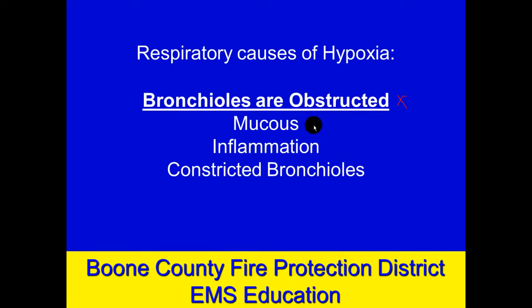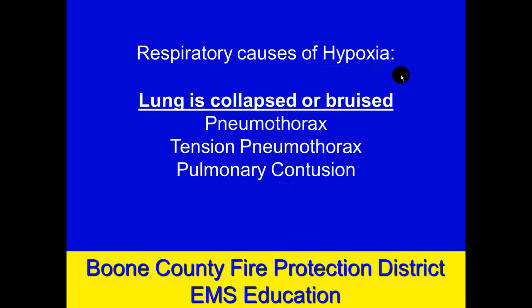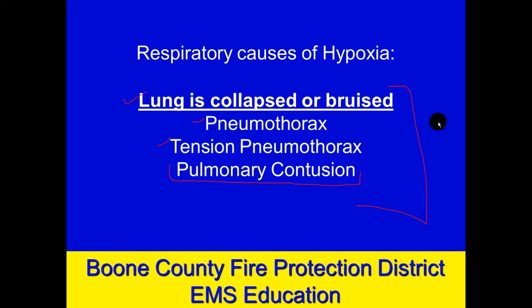It could be a lower airway obstruction. There are basically three things that cause bronchioles to obstruct: mucus buildup, inflammation and swelling from an allergic process, or the muscular walls in the bronchioles themselves can constrict down. So bronchial obstruction could be a cause of hypoxia. Maybe the lung itself is not working right — collapsed from a pneumothorax, or a bruised lung where blood has collected in the lung tissue, preventing oxygen from mixing with the bloodstream. That's called a pulmonary contusion — a traumatic cause of hypoxia.